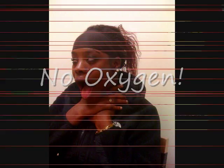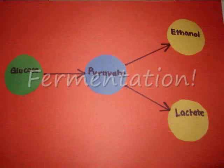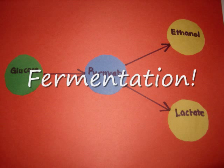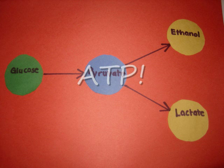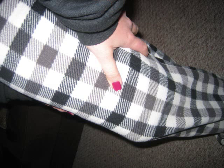In anaerobic conditions, or without the presence of oxygen, fermentation takes place. During this process, pyruvate, which is a toxin, is reduced to ethanol and lactate. As a byproduct, small amounts of ATP are produced along with carbon dioxide.